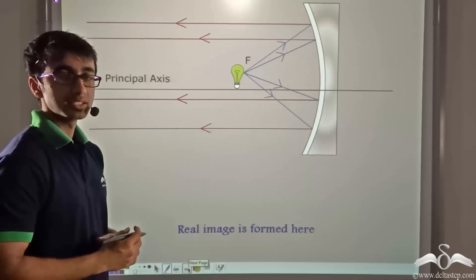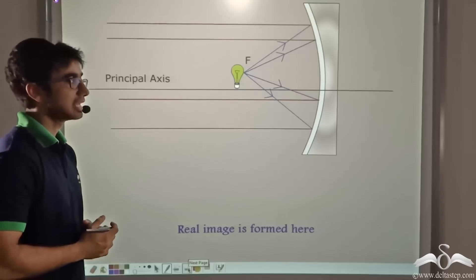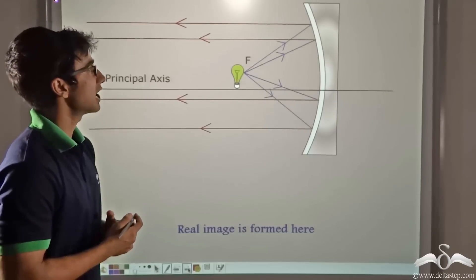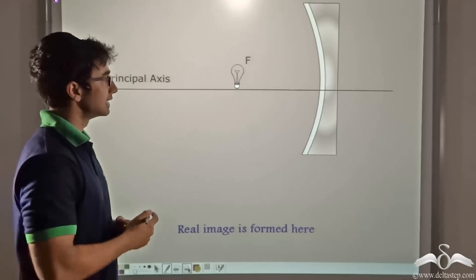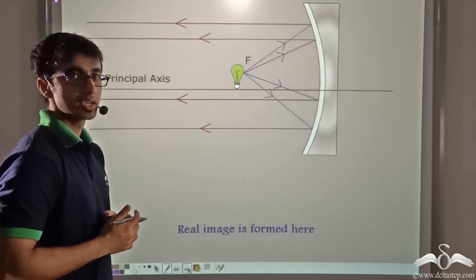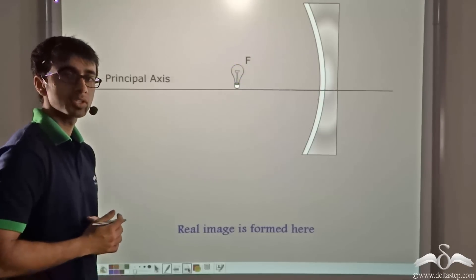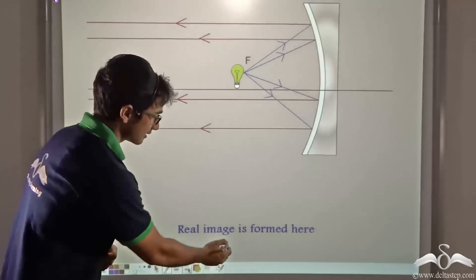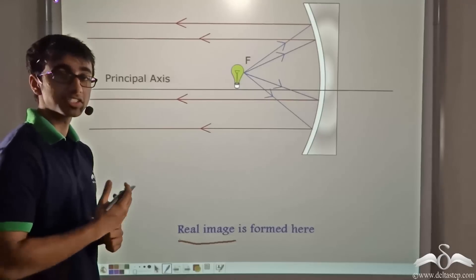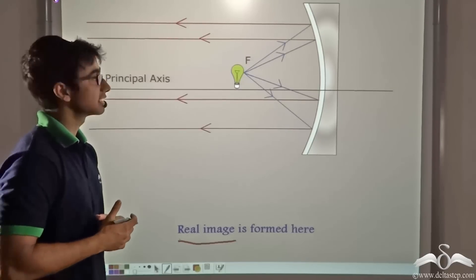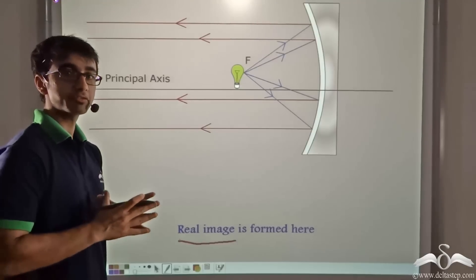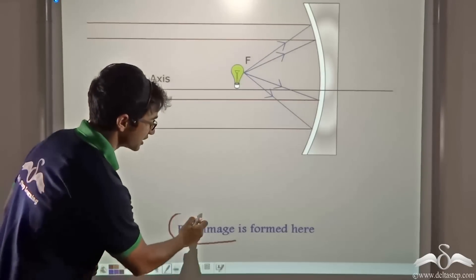In case of the headlight of a car, the bulb is kept at the focus of the concave mirror. As you can see from the animation, the rays coming from the bulb, after reflection from the concave mirror, are travelling parallel to the principal axis and parallel to one another. These rays are able to travel a long distance, but they are not meeting. So what kind of image is being formed? A real image is formed. The rays after reflection become parallel to one another, and parallel rays, even though they do not meet, we can say that they meet at infinity. So the image is formed at infinity, and we can say a real image is formed.